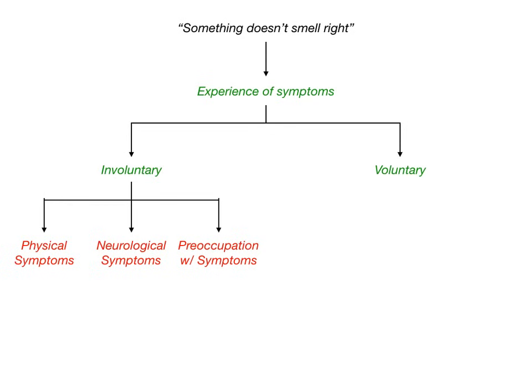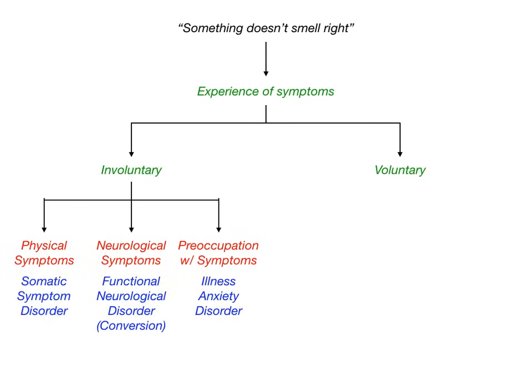The three involuntary disorders are further broken down based on whether the patient is experiencing physical symptoms, neurological symptoms, or simply has a preoccupation with symptoms. In each of these scenarios, the symptoms are being produced at the subconscious level — the patient isn't going out of their way to have these symptoms. The first case is true physical symptoms; the second is neurological symptoms like motor or sensory disturbances, abnormal reflexes, or abnormal sensory distribution. The final option is a preoccupation with symptoms — the patient is worrying about the possibility of having a symptom even when one isn't actually present.